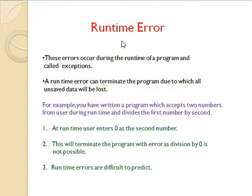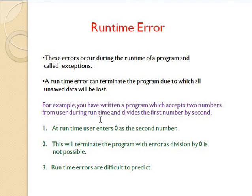The next type of error is the runtime error. These errors occur during the runtime of a program and they are called exceptions. A runtime error can terminate the program, due to which all unsaved data will be lost. For example, if you have written a program which accepts two numbers from the user as inputs, where the first number is divided by the second number, then at the runtime, if the user enters zero as the second number, then it will show up an error message.